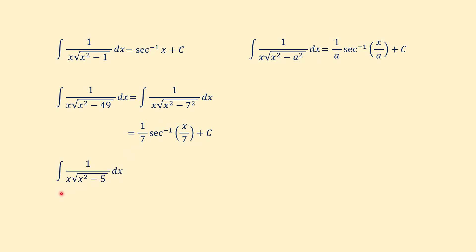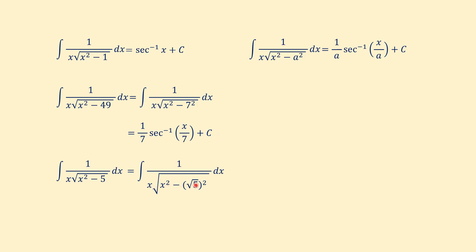Another example: the integral of 1 over (x · √(x² − 5)) dx. First we rewrite 5 as (√5)², so the integrand becomes 1 over (x · √(x² − (√5)²)), which fits the formula with a = √5. The answer is 1/√5 · arcsec(x/√5) plus c.